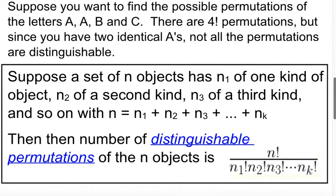So if you have a set of n objects, it has n1 of one kind, n2 of a second kind, n3 of a third kind, and so on, the number of distinguishable permutations is n factorial over each one of those kind of subsets factorial. And this is actually probably easier just to see a problem of.